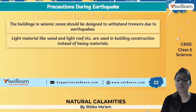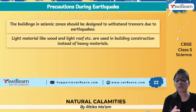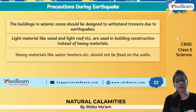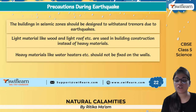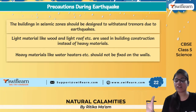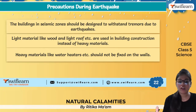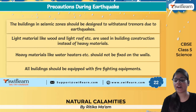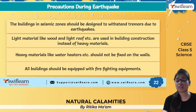Light materials like wood and light roofing are used in building construction instead of heavy materials, since these regions are prone to earthquakes. Heavy materials like water heaters should not be fixed on walls because during an earthquake everything falls and can lead to more loss of life. All buildings should also be equipped with fire-fighting equipment, because earthquakes can cause short-circuiting and fires.